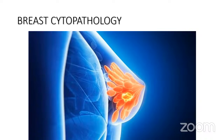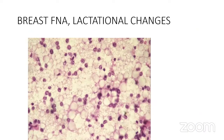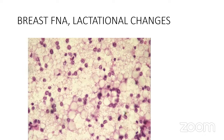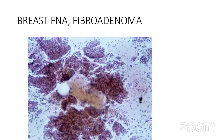Breast cytopathology: lactational changes can be a pitfall. The aspirate is very cellular with lots of bare nuclei with prominent nucleoli, but notice the frothy background — these are milk globules. This is from a patient who may be nursing or pregnant. Fibroadenoma is another potential pitfall — a very well-defined breast lesion that can yield a very cellular aspirate.